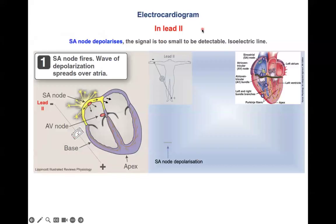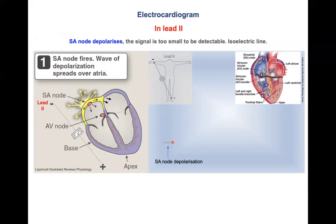Now we have lead 2 according to Einthoven. In lead 2, the minus (negative) electrode is here and the plus electrode is here. The SA node triggers the first signal, so you would expect a deflection. However, the mass of the SA node is so small and the number of cells is so small that it produces no detectable signal. The flat line just before the P wave — before the excitation of the atria — represents the excitation of the SA node. Too small a mass, too weak a signal: no voltage detectable.